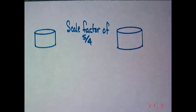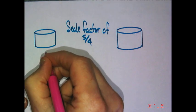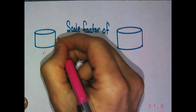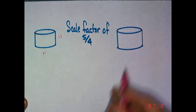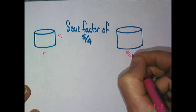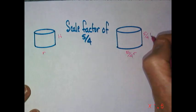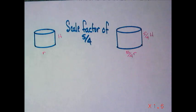Quickly, what is the side ratio? What do you think? Is it 5 to 4? Actually, so if this has a radius of r and a height of h, this one's going to have a radius of 5 fourths r and a height of 5 fourths h.